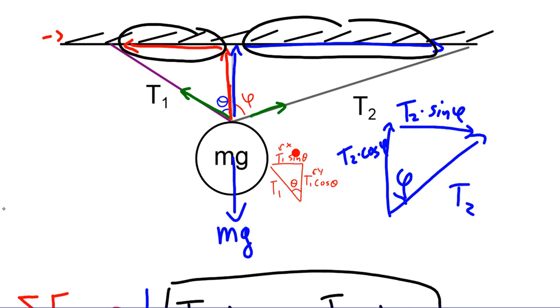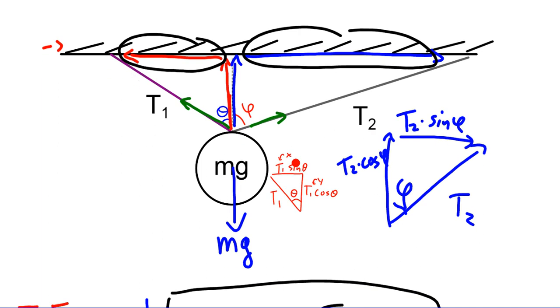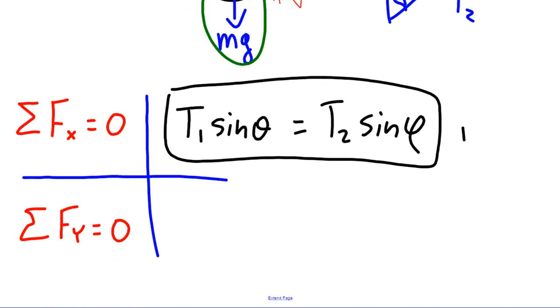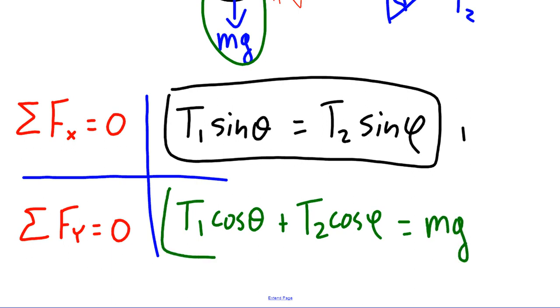Now we're going to look at the vertical direction. We have the vertical contribution of T1, we have the vertical contribution of T2, and the downward contribution of weight. And all three of those have to add up to zero. Or in other words, T1 cosine theta plus T2 cosine phi minus mg equals zero. I'm going to solve it in terms of mg, so I'm going to put the mg on the other side. So in other words, T1 cosine theta plus T2 cosine phi equals mg. And there's our second equation.